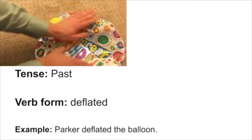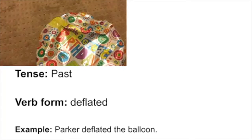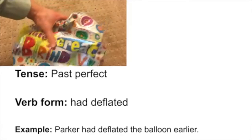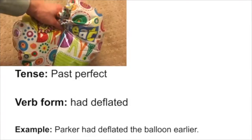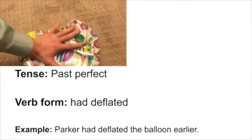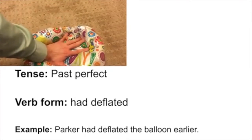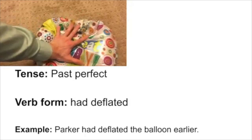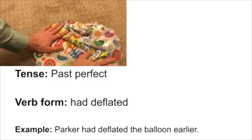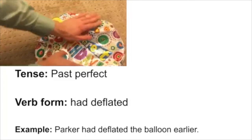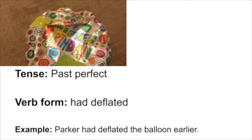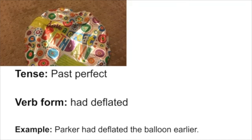After the balloon has been deflated, we'd use the past tense — for example, 'Parker deflated the balloon.' Finally, to show that an action happened before a specific time in the past, we use the past perfect tense by putting 'had' in front of the past tense form, giving us 'had deflated' — for example, 'Parker had deflated the balloon earlier.'